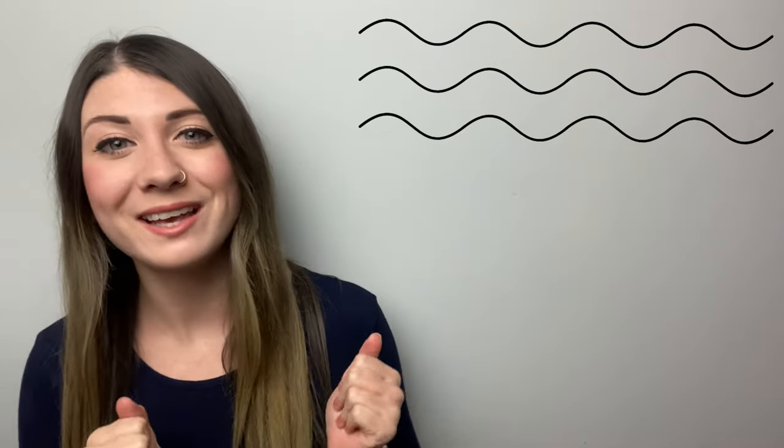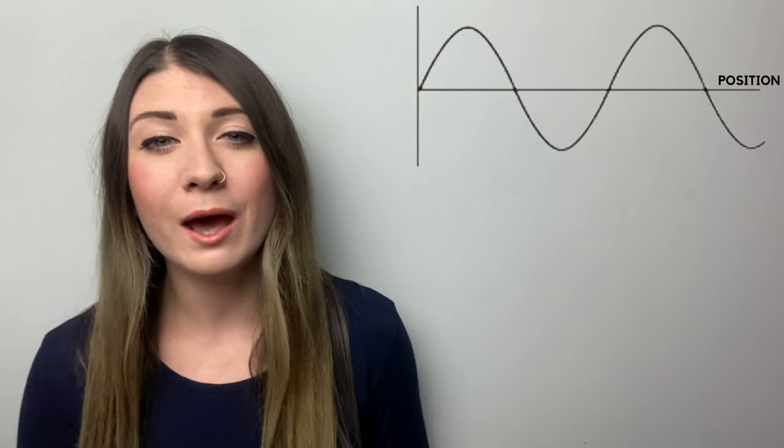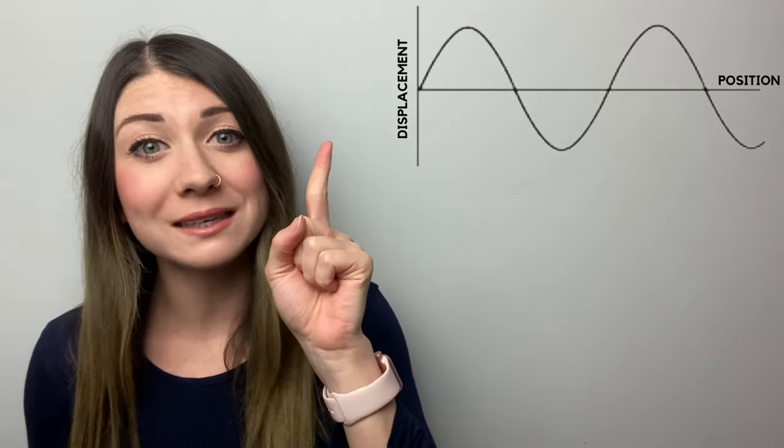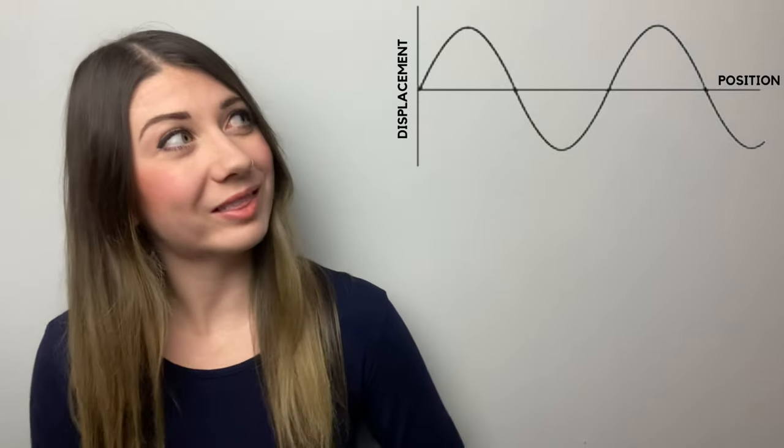Right, so transverse waves look like this. And we can also draw them on a graph like that with direction of travel or position on the x-axis and wave undulation and displacement on the y-axis. So they can be drawn like this.